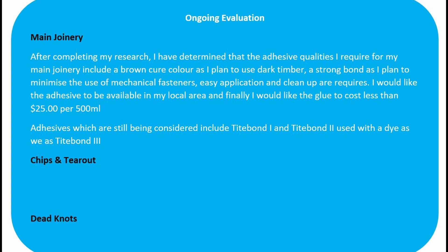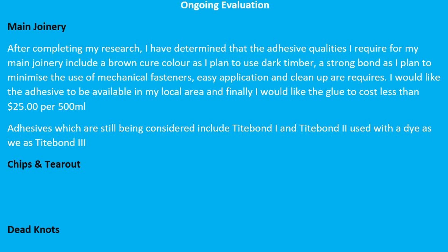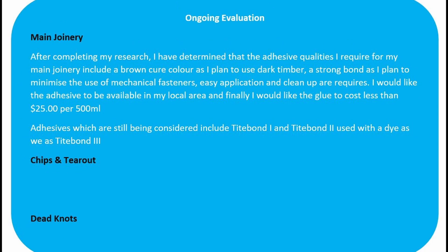Finally, we are up to the ongoing evaluation. It is important to break the glues down into their uses during this section — for example, main joinery, chips and tear-out, and filling of dead knots. Under each one of those headings, you would have a statement something like this: 'After completing my research, I've determined that the adhesive qualities I require for my main joinery include a brown cure colour as I plan to use dark timber, a very strong bond as I will try to minimise the use of mechanical fasteners, easy application and clean-up, and it must be available within my area. Finally, I would like the glue to cost under $25 per 500ml.' Adhesives still being considered at this point include Titebond 1 and 2 used along with a dye, and Titebond 3. Go through and repeat the above statement for each part of your project — chips and tear-outs, and filling any dead knots.